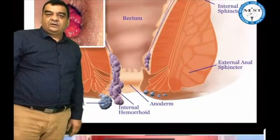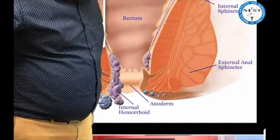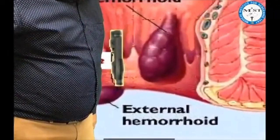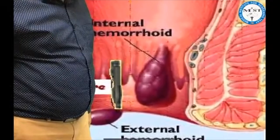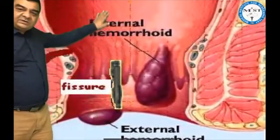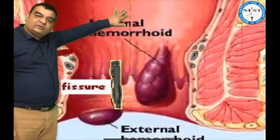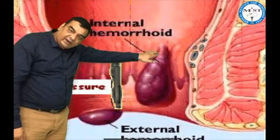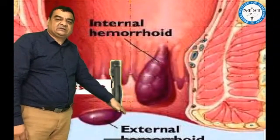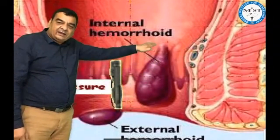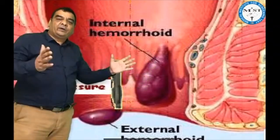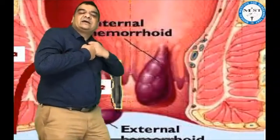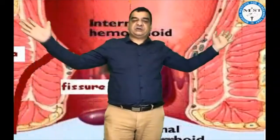How these patients can present to us: in a constipated individual, when hard fecal matter is coming through, that hard fecal matter can erode the surface and the vein inside will open up. As soon as the vein opens up, there will be bleeding like a splash in the pan.